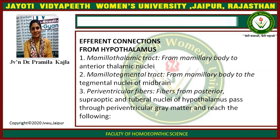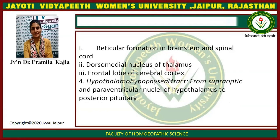Efferent connections from the hypothalamus to different parts of the brain include: the mamillo-thalamic tract from the mammillary body to the anterior thalamic nuclei; the mamillo-tegmental tract from the mammillary body to the tegmental nuclei of the midbrain; and periventricular fibers from the posterior, supra-optic, and tuberal nuclei of the hypothalamus, passing through the periventricular gray matter to reach the reticular formation of the brainstem and spinal cord, the dorsomedial nuclei of the thalamus, and the frontal lobe of the cerebral cortex. The hypothalamo-hypophyseal tract runs from the supra-optic and paraventricular nuclei of the hypothalamus to the posterior pituitary.